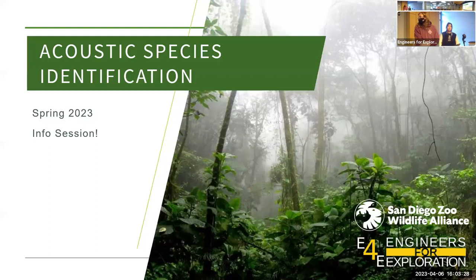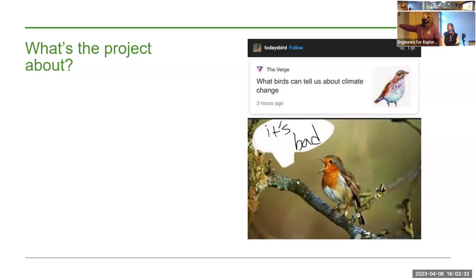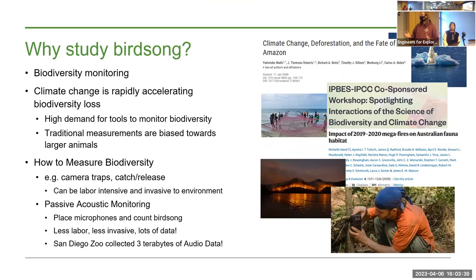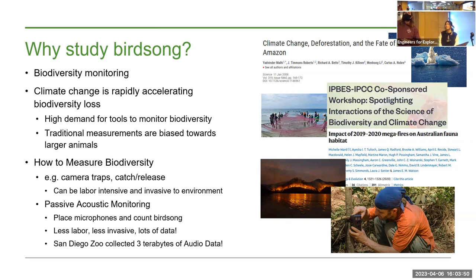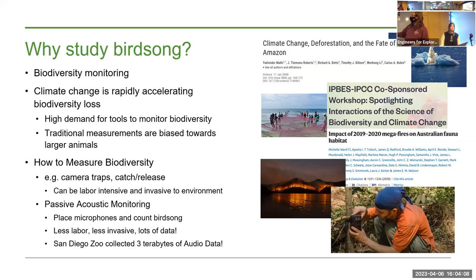Welcome to the Acoustic Species Identification team. This project is about how birds can help us study biodiversity and protect the environment. Climate change is rapidly accelerating biodiversity loss. Previous techniques like camera traps — putting cameras in the environment and counting animals — are typically used to detect large creatures, but most large creatures are rare. There aren't as many mammals as there are birds, insects, or flying creatures, so we end up missing a large part of biodiversity.